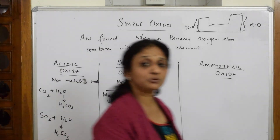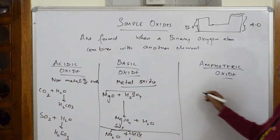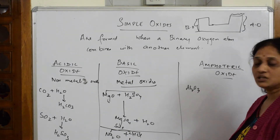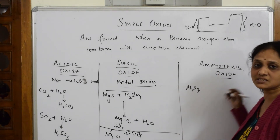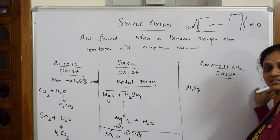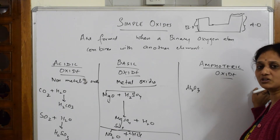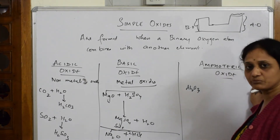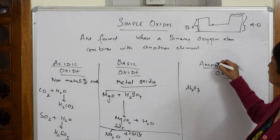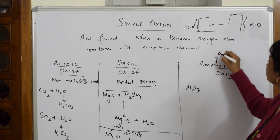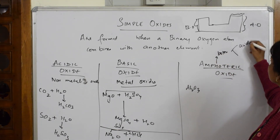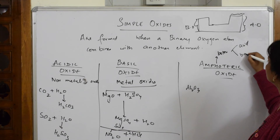Now, speaking about amphoteric oxides — the example is Al2O3. Amphoteric, as the name suggests, means it dissolves both in acid as well as base. Just like a frog is called an amphibian because it can survive both on land and in water. Similarly, Al2O3 can dissolve in both acid and base.